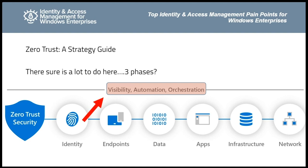The three phases of zero trust are visibility, automation, and orchestration. Without visibility, we are in the weeds. Visibility is the fundamental layer we should focus on when considering identity and access management.